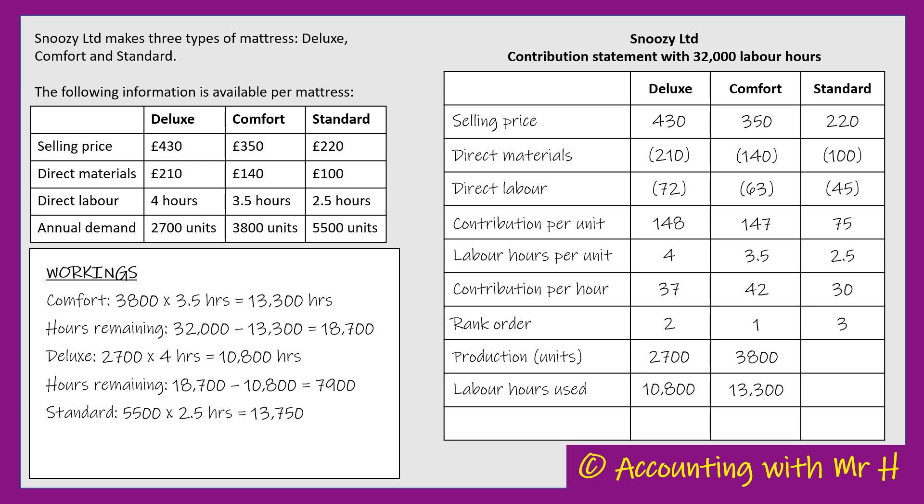All we can do is make optimum use of what's left and use that 7,900 hours making as many Standards as we can until we've run out of hours. I'm going to take the 7,900 labour hours available, divide that by the two and a half labour hours it takes to make a Standard, and that tells me we can make 3,160 units of the Standard mattress.